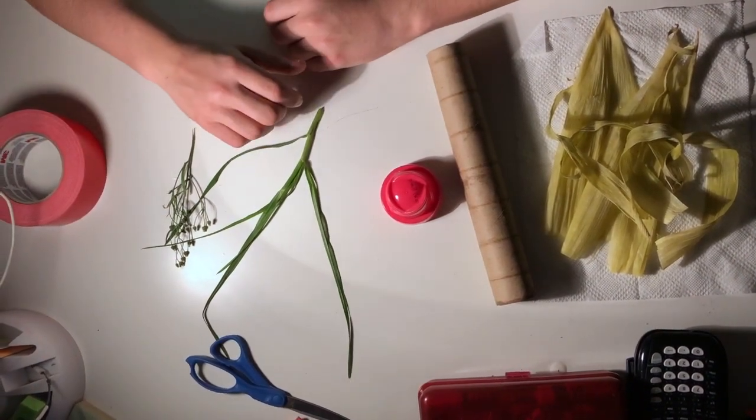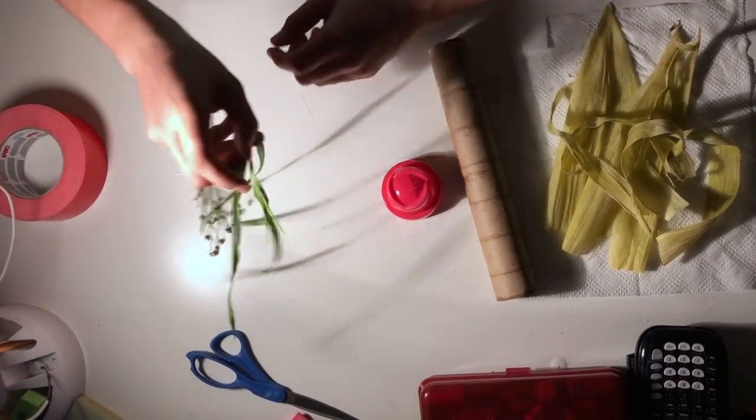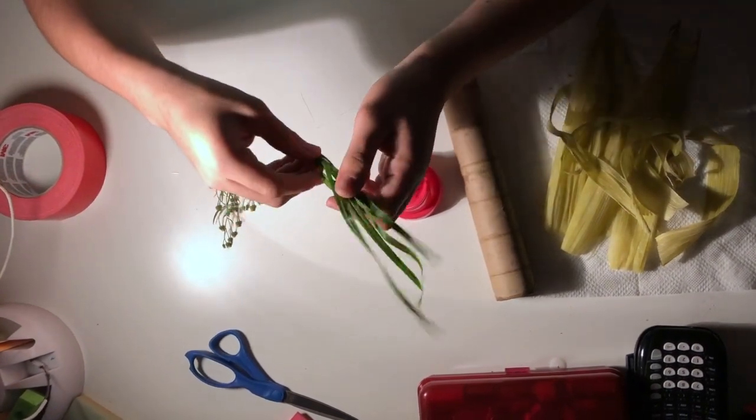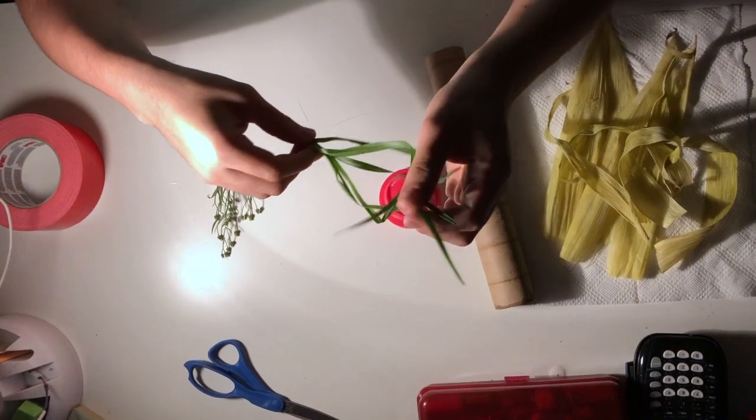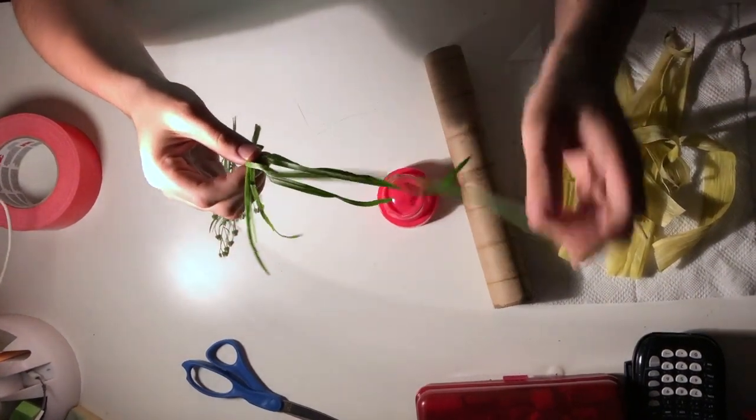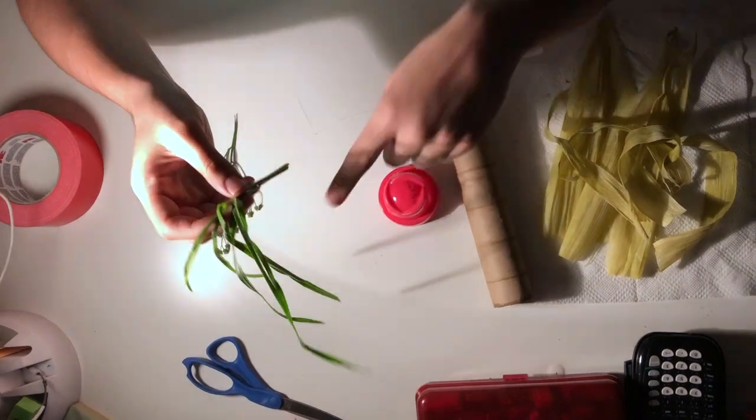Let us begin with the dendrites. The dendrites are branch-like structures that receive information from another neuron. Dendrites are attached to the soma.